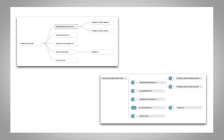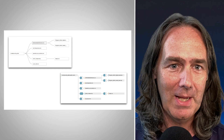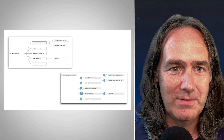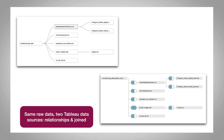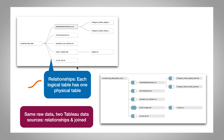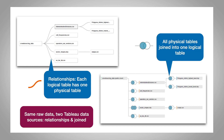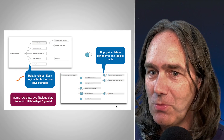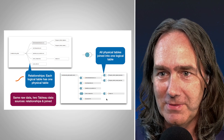Different views are taking different amounts of time to render. On screen are the two data sources that were set up — this came from a problem someone had on the Tableau forums. We have the same raw data: one with relationships (the noodle up top) and one with joins (down on the right). Visually, there's a similar number of tables in both. With relationships, each logical table has one physical table; with joins, all physical tables are joined into one logical table.